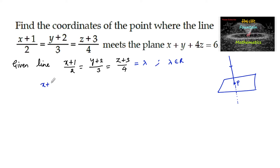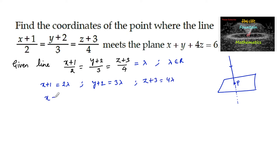So x+1 = 2λ, y+2 = 3λ, and z+3 = 4λ. That gives us x = 2λ−1, y = 3λ−2, and z = 4λ−3.